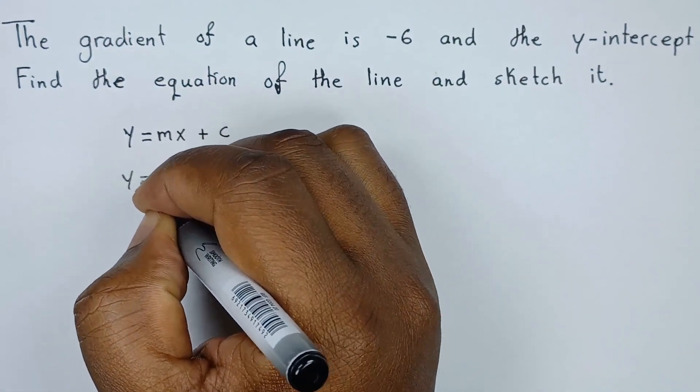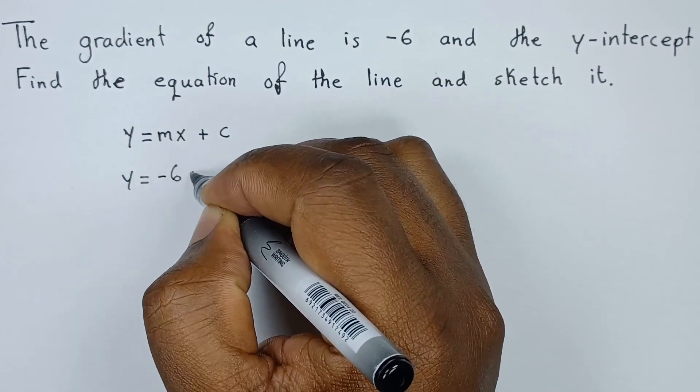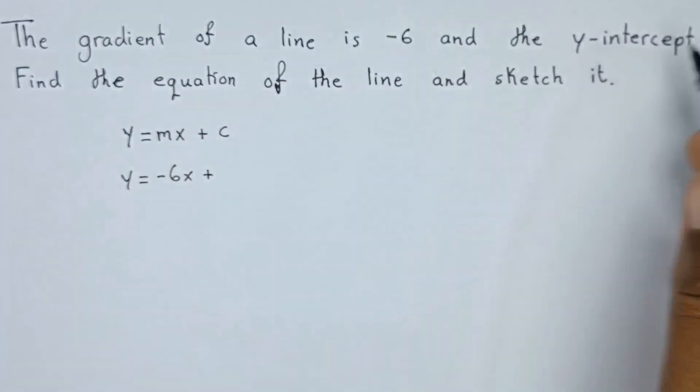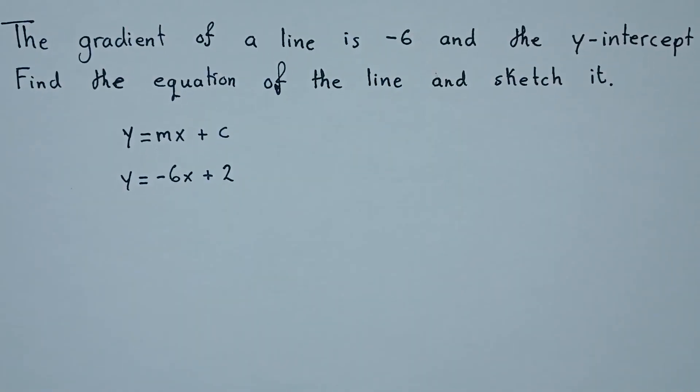So y equals negative 6x plus the y-intercept which is 2. As easy as that. Then this is the equation of the line.